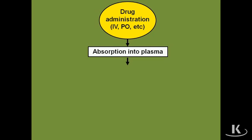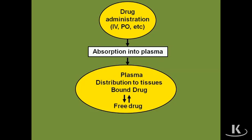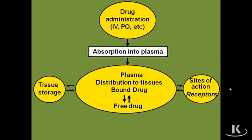Drugs get absorbed into the plasma. That allows the drug to move into the blood and then ultimately to be distributed to various tissues. It can be bound up in the plasma to various plasma proteins, or the drug can even bind up in various tissue storage sites as well. Of course, we hope that the drug will interact with its receptor, and that will relate to its mechanism, and we'll talk about that.